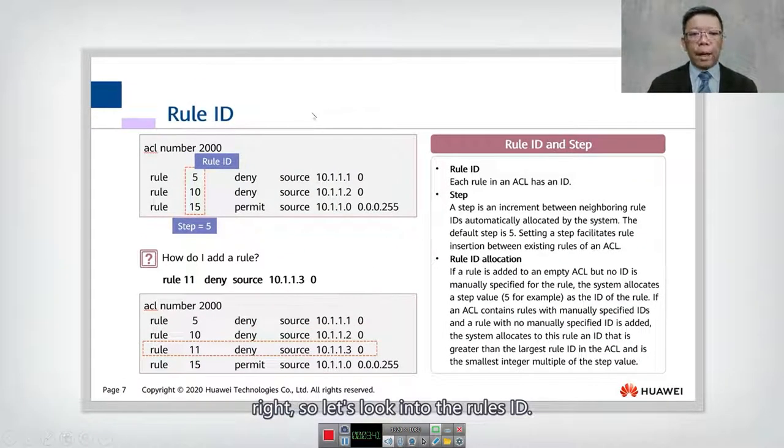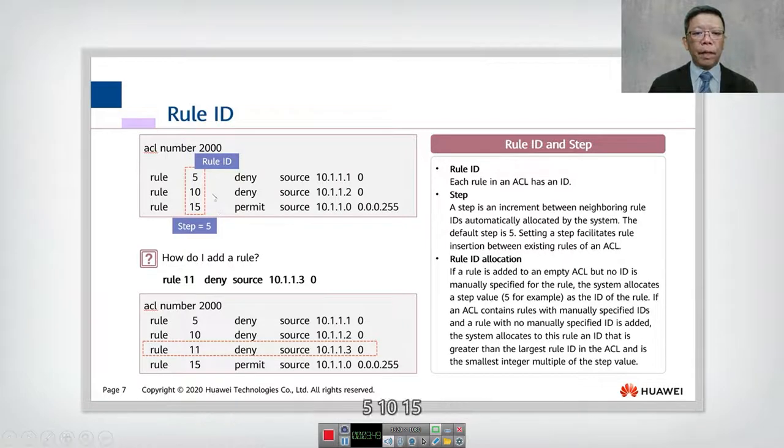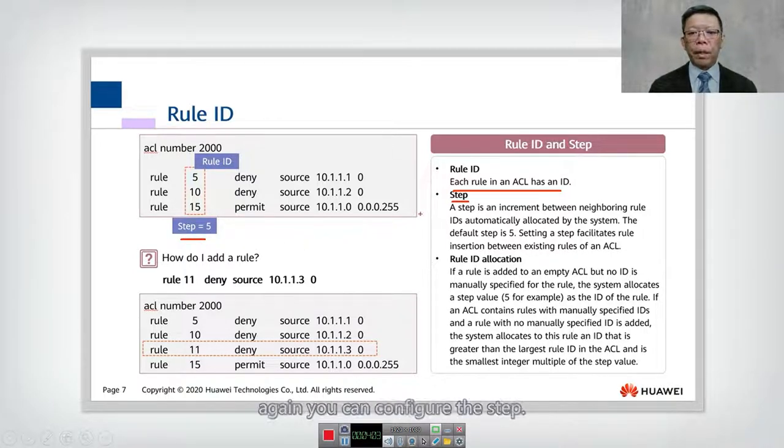All right, so let's look into the rules ID. The rules ID as specified just now in the example, it is in ascending order: 5, 10, 15. You can see we have steps. So what is a rules ID? Each rules in an ACL has an ID. So we have a step. So here we can have a step of 5. You can configure the step. By default, the step is 5.